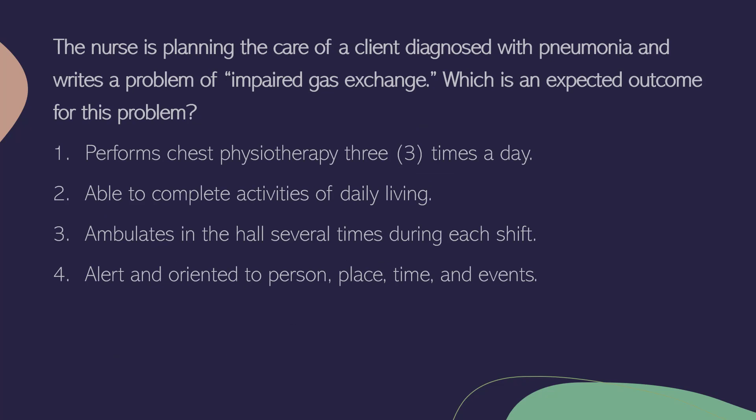The nurse is planning the care of a client diagnosed with pneumonia and writes a problem of impaired gas exchange. Which is an expected outcome for this problem? 1. Performs chest physiotherapy three times a day. 2. Able to complete activities of daily living. 3. Ambulates in the hall several times during each shift. 4. Alert and oriented to person, place, time, and events.